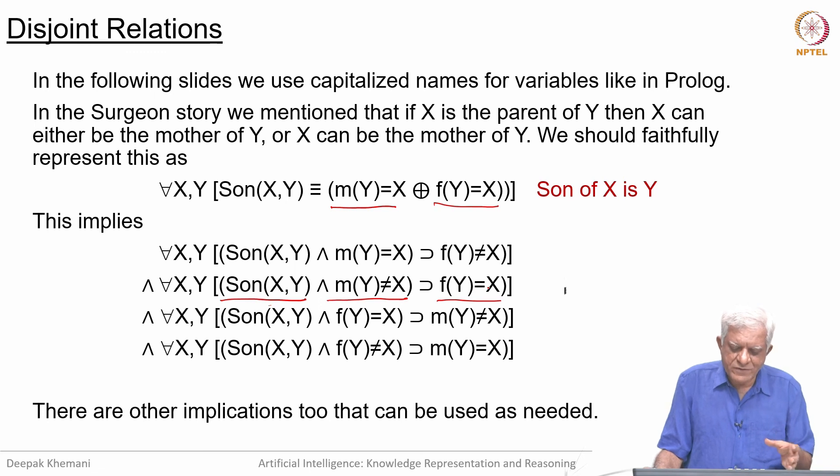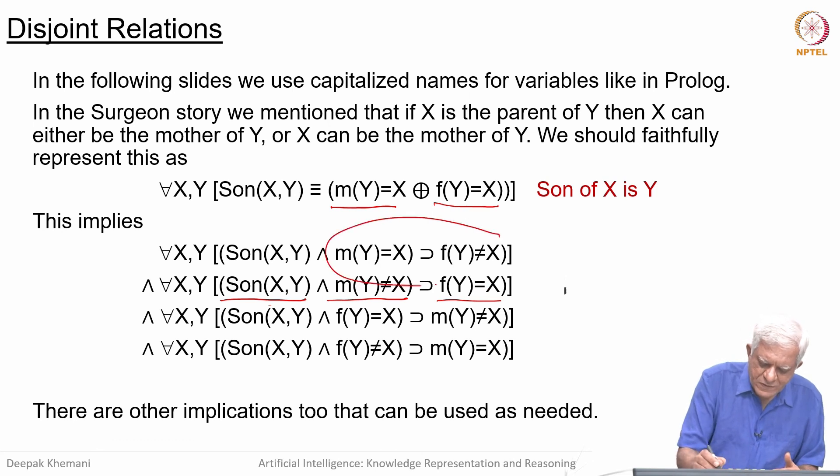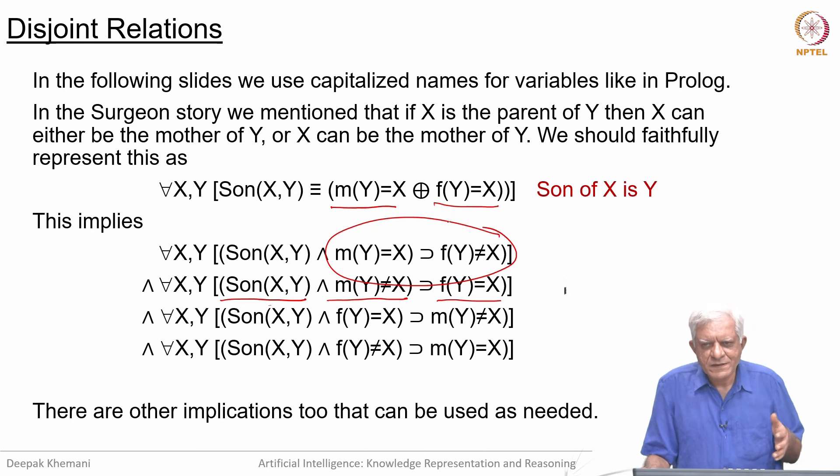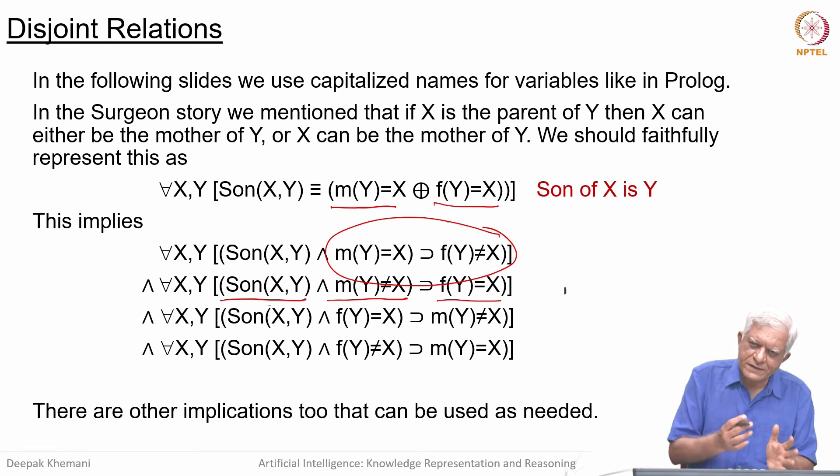There are other implications—I would encourage you to explore what other things are there. For example, if X is the mother of Y, then X is not the father of Y. That is what we wanted to say: if somebody has a son, then either they are his mother or his father, but not both. This sub-fact is also true. Think about this, and we will come back and look at more binary relations between two people. To a large extent, many things in logic that we want to do will be expressed in terms of binary relations.